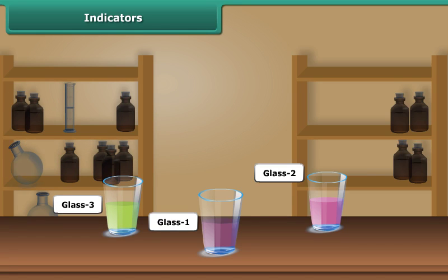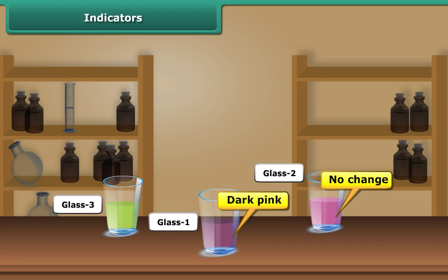What do you see? You can notice that in glass 1, the color changes to dark pink. Lemon juice is acidic in nature, so there is a change in the color of the indicator. There is no color change in glass 2. This is because water is neutral in nature.